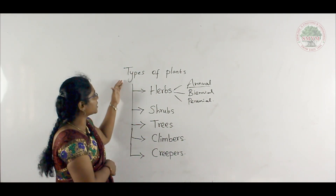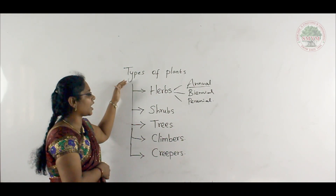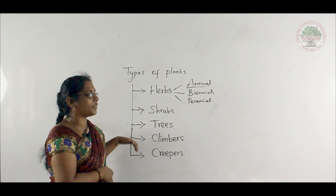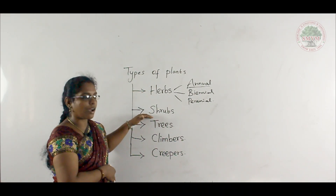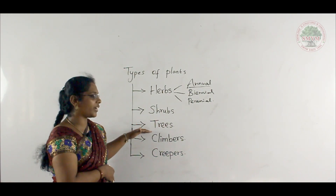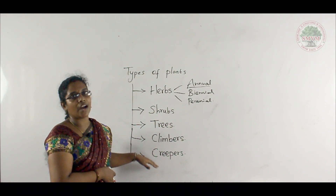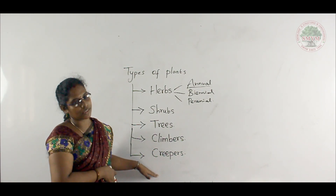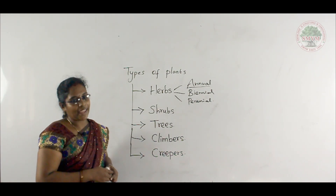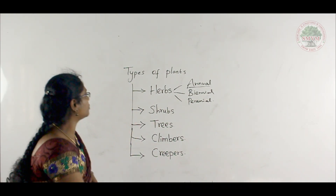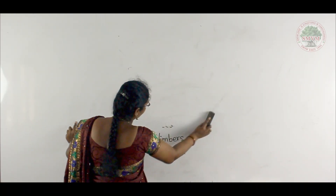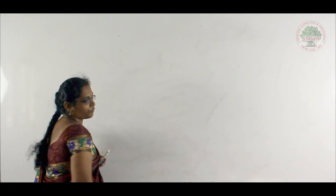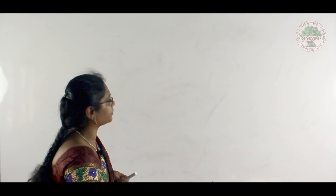So far we have discussed five different types of plants: herbs, shrubs, trees, climbers, and creepers. Next, we are going to discuss the parts of the plant.